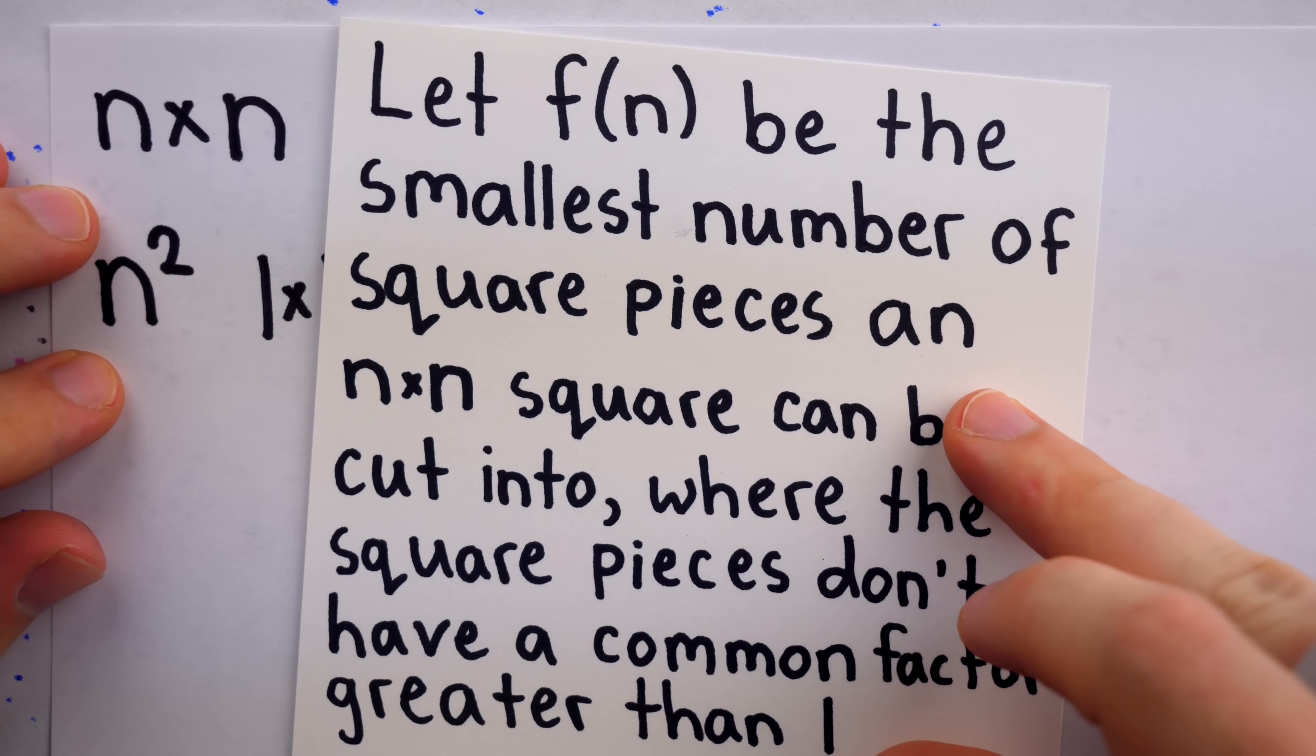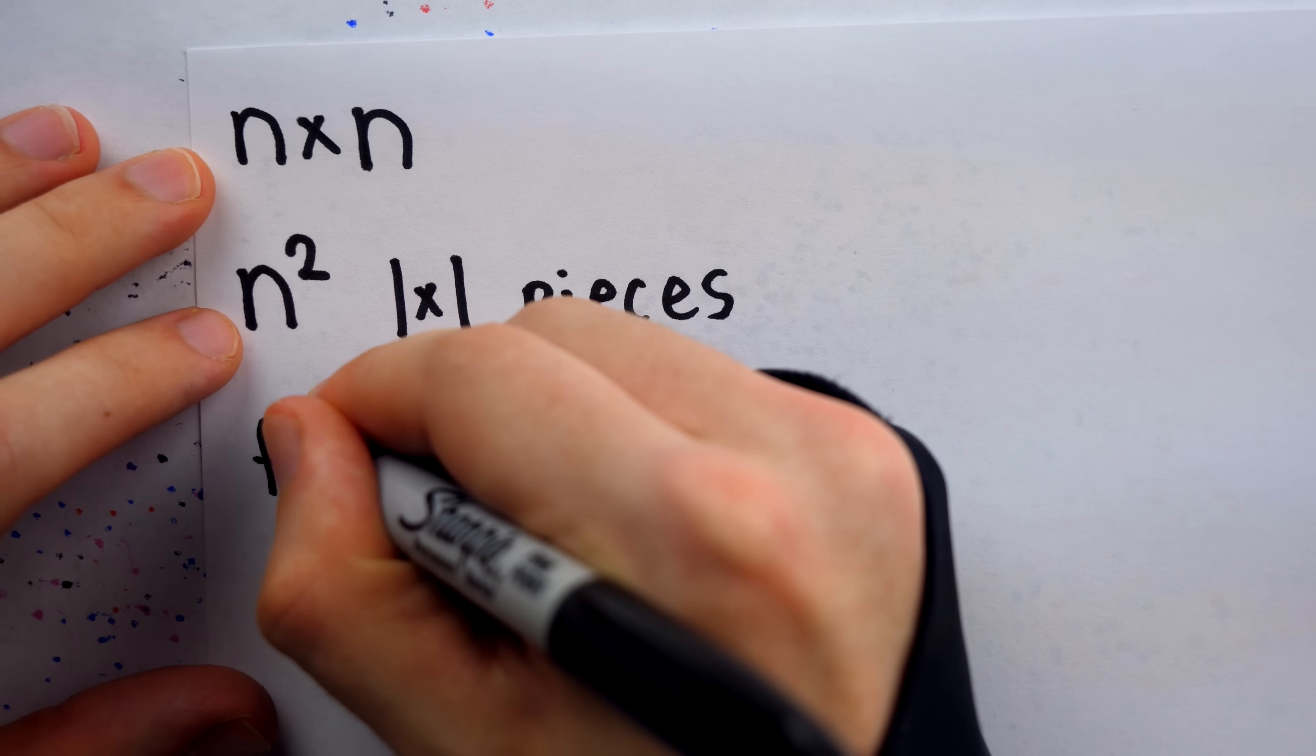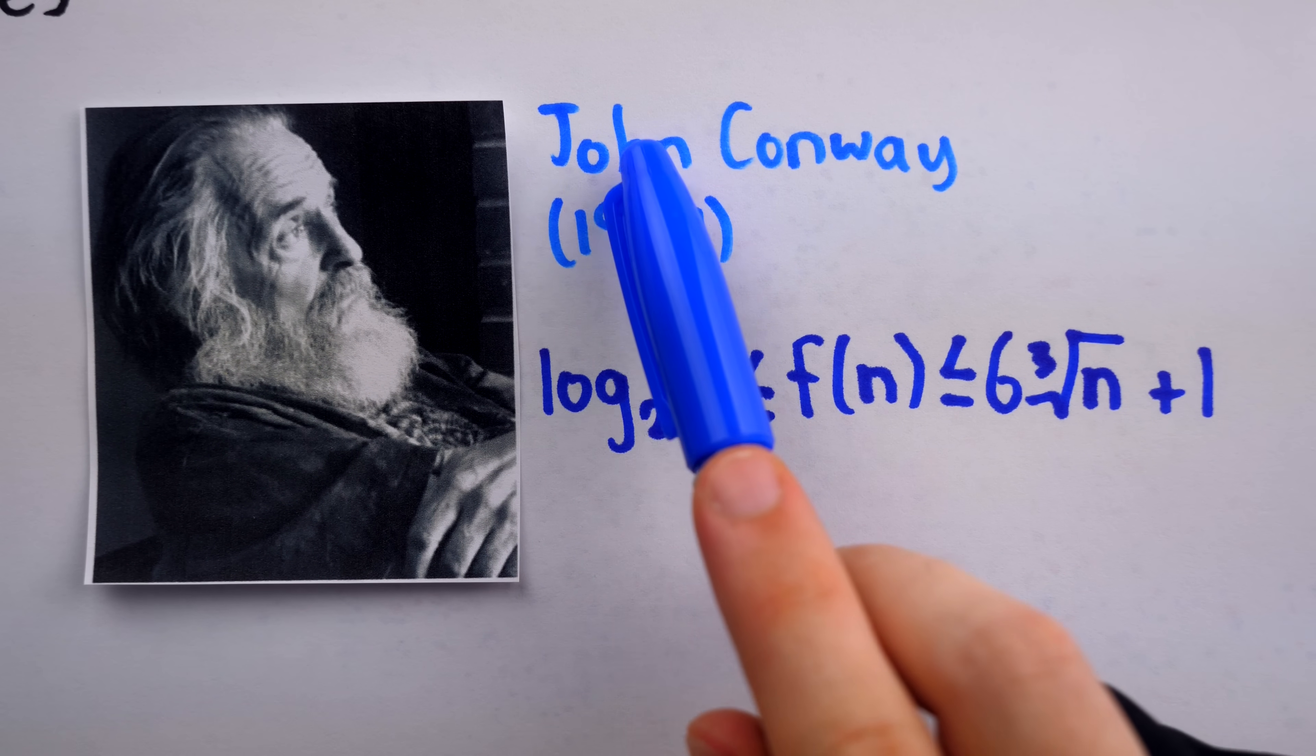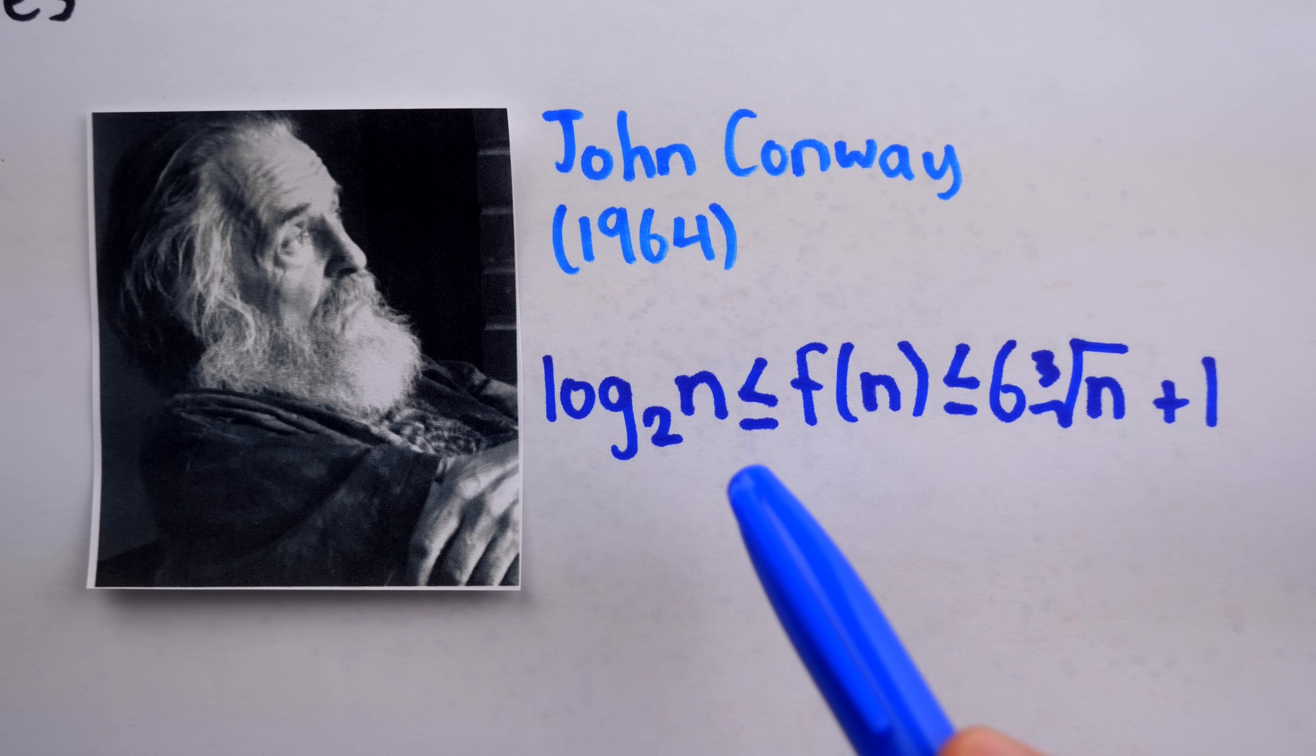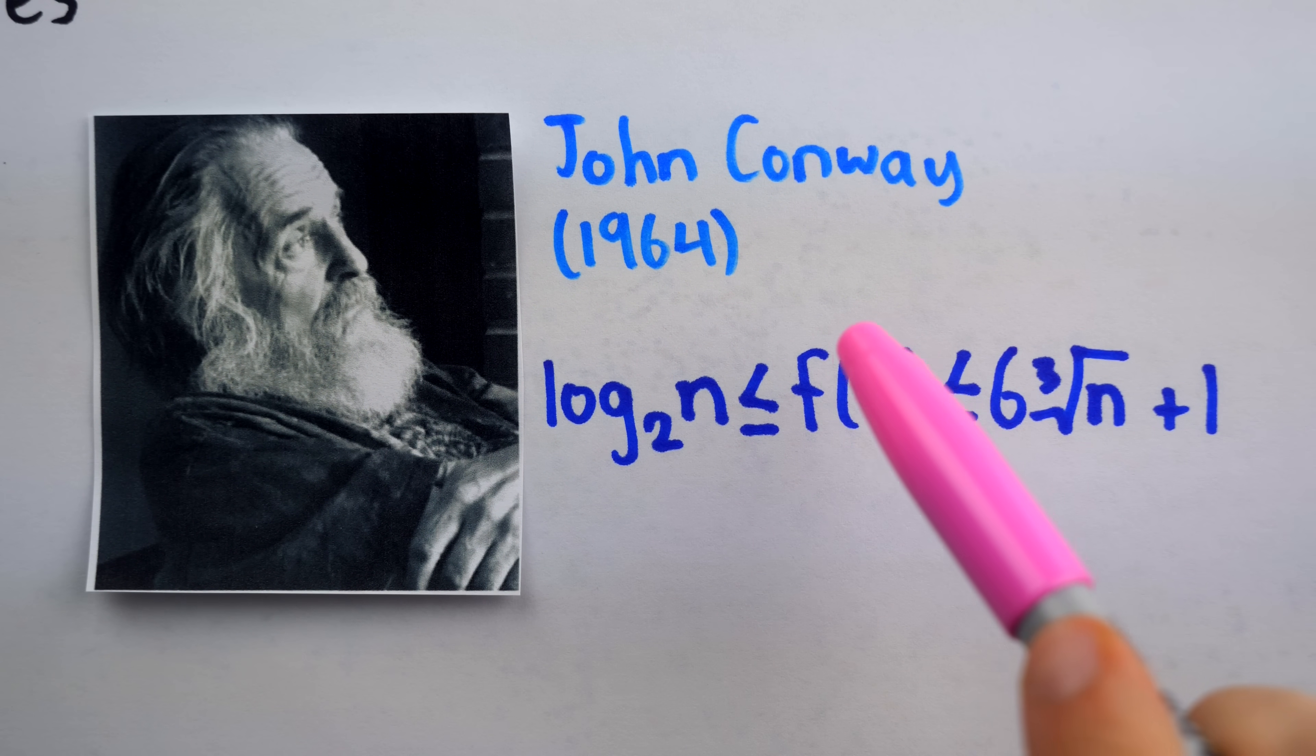Let's bring in some notation, and say that f(n) is the smallest number of square pieces an n by n square can be cut into, where the square pieces don't have a common factor greater than 1, but we're not requiring that they're all distinct. Then, while it's obvious that f(n) is no greater than n squared, the worst possible solution in each case, we actually know much more. In 1964, legendary mathematician John Conway proved that f(n) is at least log base 2 of n, and no more than 6 times the cube root of n plus 1. I'll leave a link in the description to the paper where John Conway proved this, it's an interesting read, and on the whole fairly accessible.